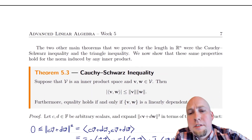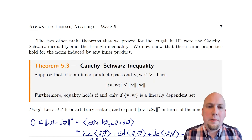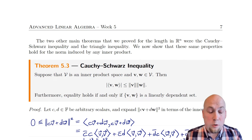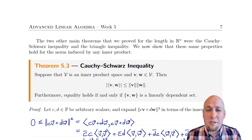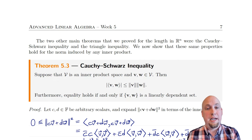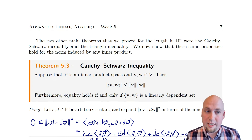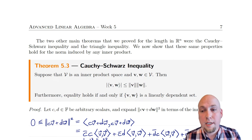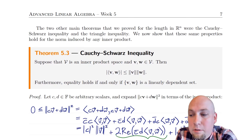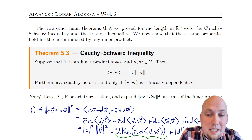Those are the obvious and easy properties of norms induced by inner products. But there are also a couple of very non-obvious properties. We saw these for the length of a vector in R^n in the previous course, but let's pin them down in arbitrary vector spaces now. The first one is the Cauchy-Schwarz inequality. You've seen this already in R^n, but now we're going to show it for arbitrary inner product spaces.